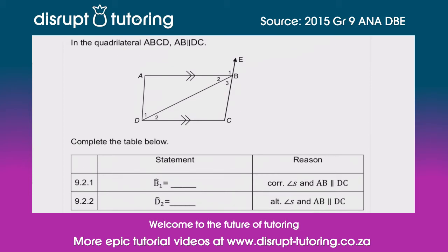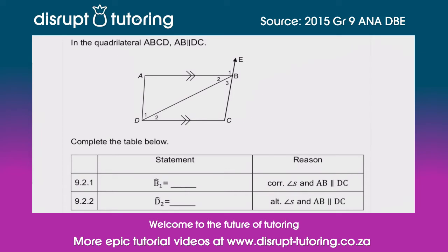They've said corresponding angles, and AB is parallel to DC. So what do we know about corresponding angles? That is our F-shape. Let's have a look — B1 is over there. So what type of F is shown? We can see the F that's there.